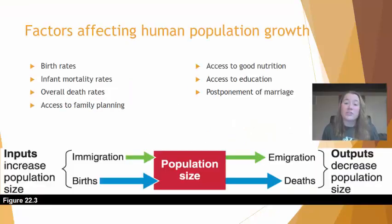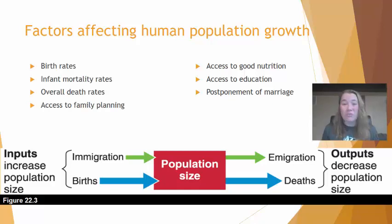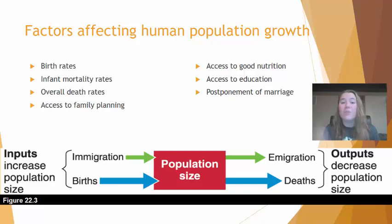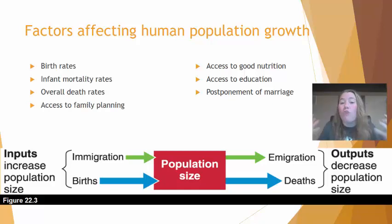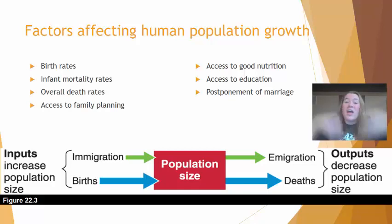There are several factors that affect human population growth. These include the number of babies born, how likely those babies are able to survive, how likely people are able to live in that particular location, access to family planning and birth control, access to enough quality food for adequate nutrition, access to education — particularly for young women — and the postponement of marriage. Those factors affect how many babies are born, how many people die, and how likely people are to move into or away from an area, all of which influences human population size.